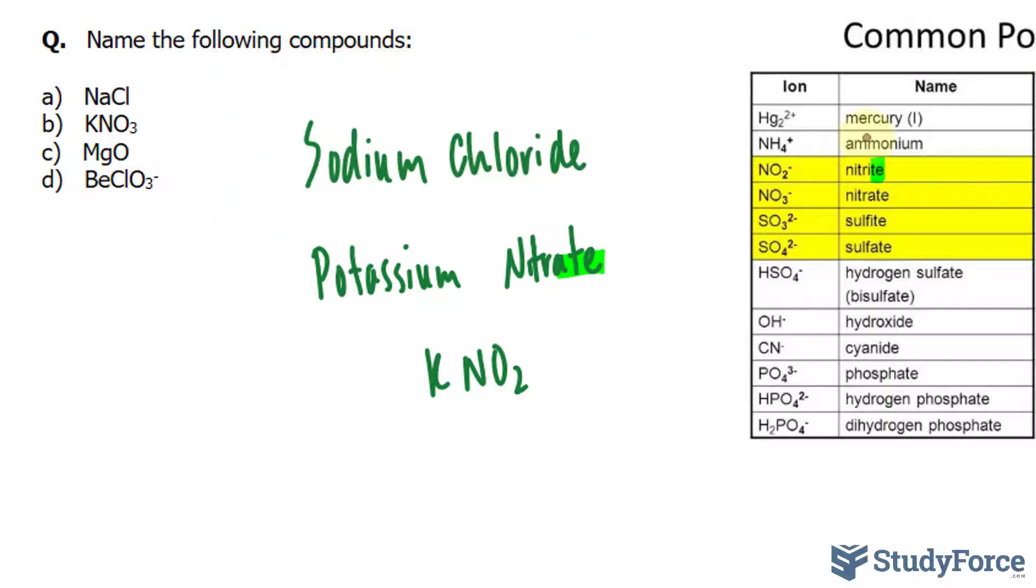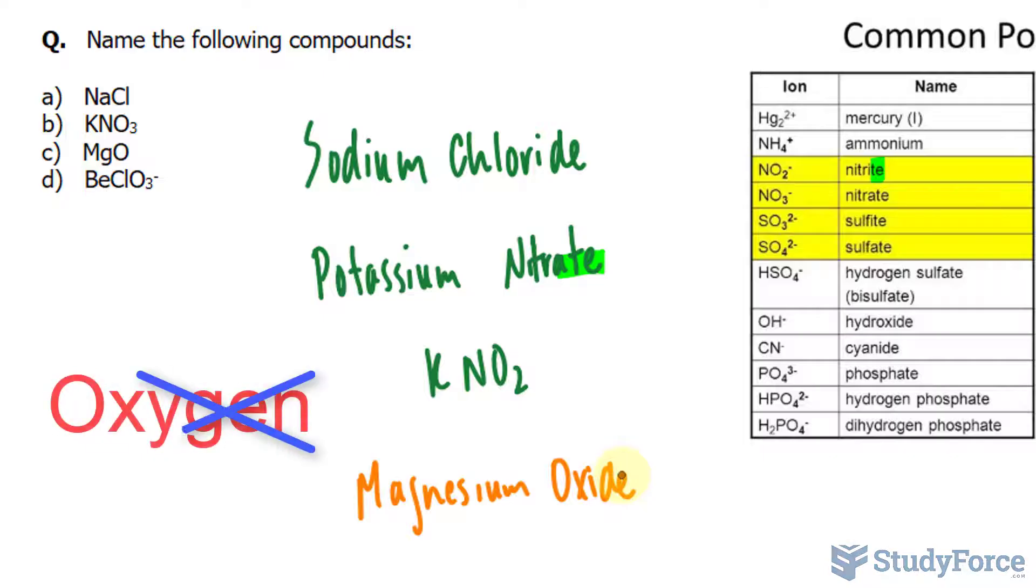So you would name them just like how you'd name any other ionic compound, where you have magnesium oxide. So we drop the -ygen in oxygen and replace it with -ide. No polyatomic ions here.